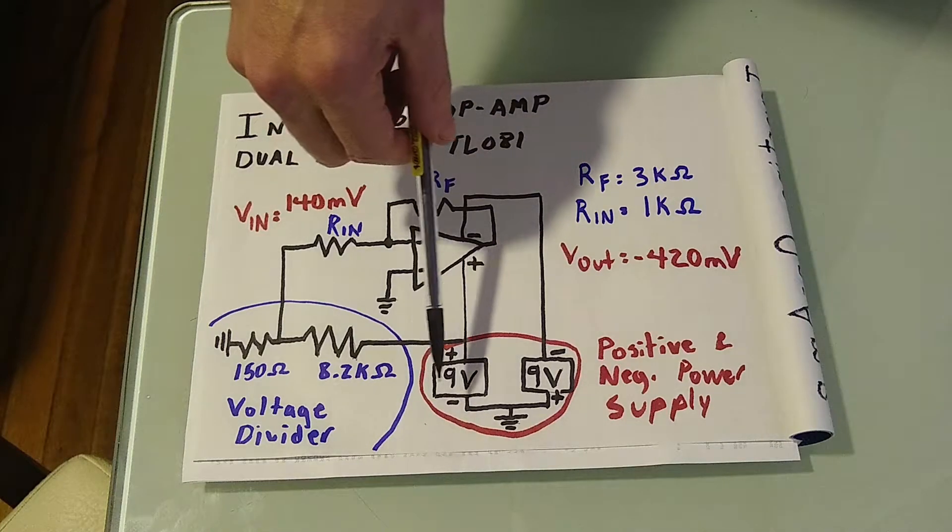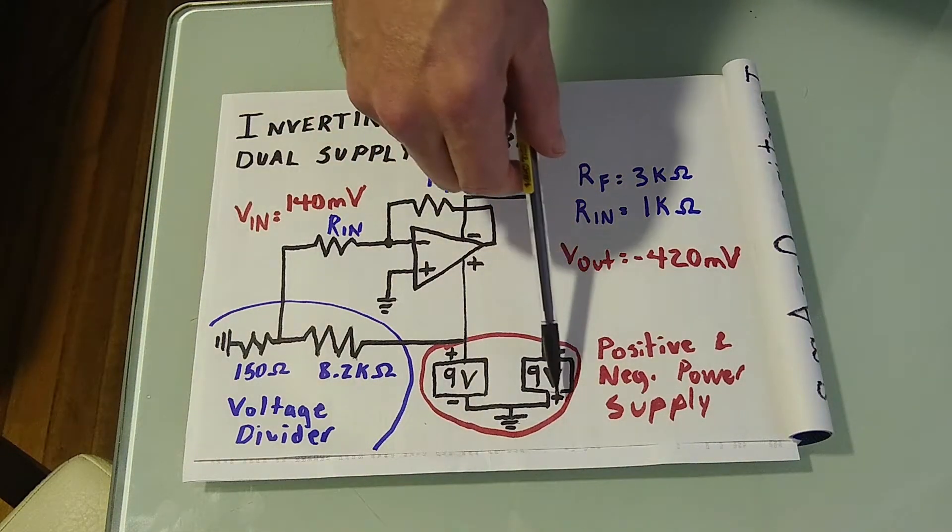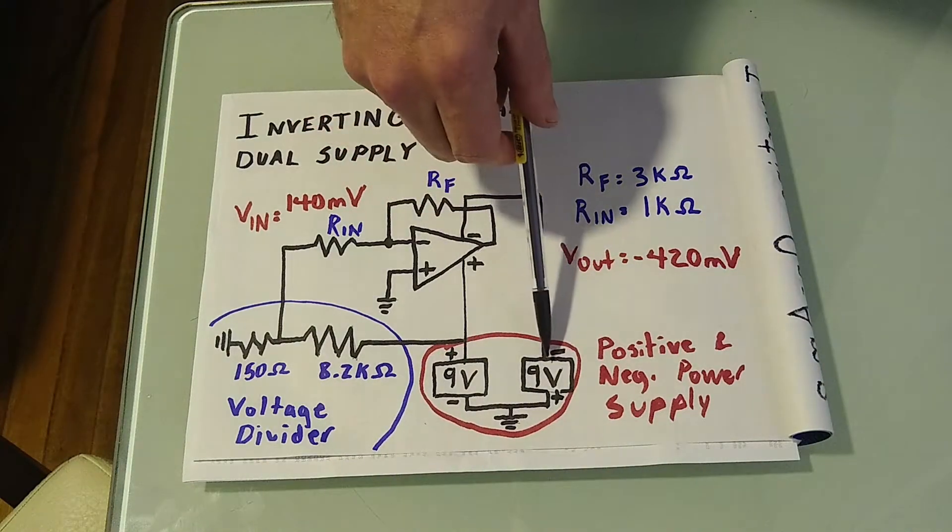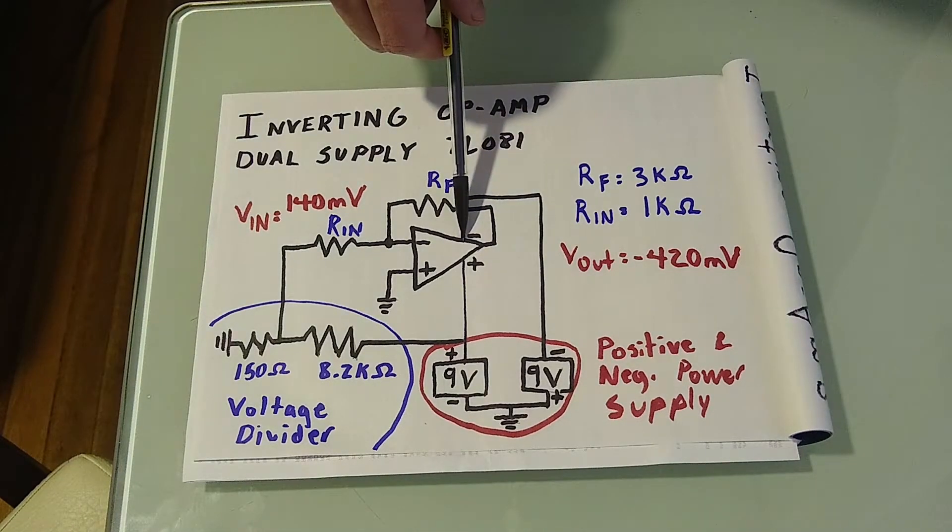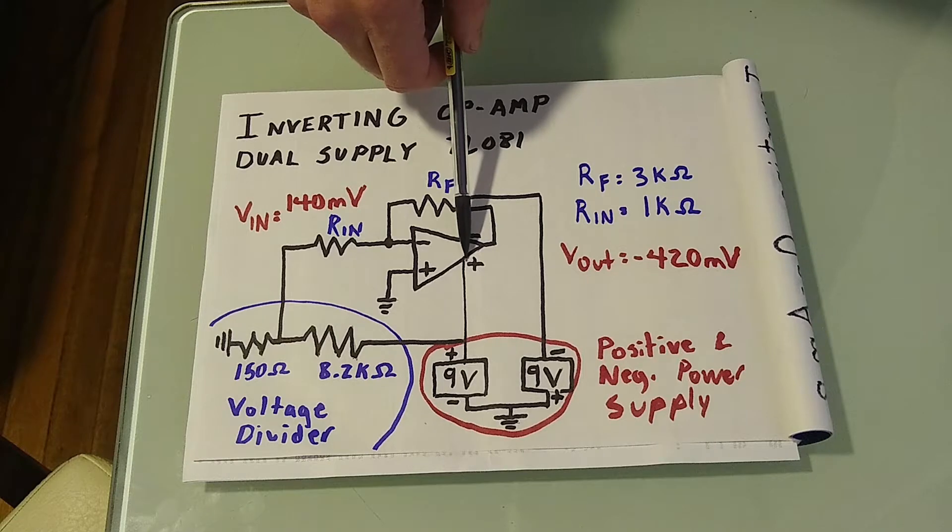To do this, you can configure two batteries as so: positive of one and the negative of another grounded, and then the negative of this battery to the negative power supply input, and the positive of this battery to the positive power supply input.